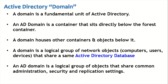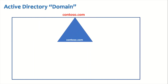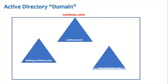An Active Directory domain is a logical group of objects that shares common administration, security, and replication settings. In our upcoming sessions we are going to cover administration, security, and Active Directory replication in detail. Contoso.com is our domain, and as this is a forest root domain, the name of this forest is also contoso.com. We can configure more than one domain in a single forest — for example, testing.contoso.com and dev.contoso.com. It's up to the organization what naming convention they want to use.